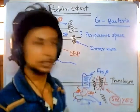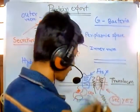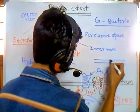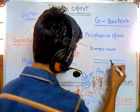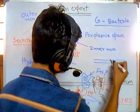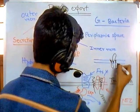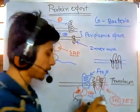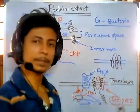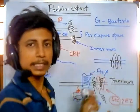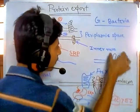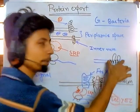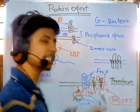The translocon then grabs the next hydrophobic stretch and embeds it into the membrane as well. The process is like a sewing machine — with alternating hydrophobic and hydrophilic segments, the Sec proteins stitch these polypeptide stretches into the cell membrane one by one. The result is that both sides of the membrane contain the hydrophilic portions of the protein, while the interior of the membrane contains the hydrophobic regions.